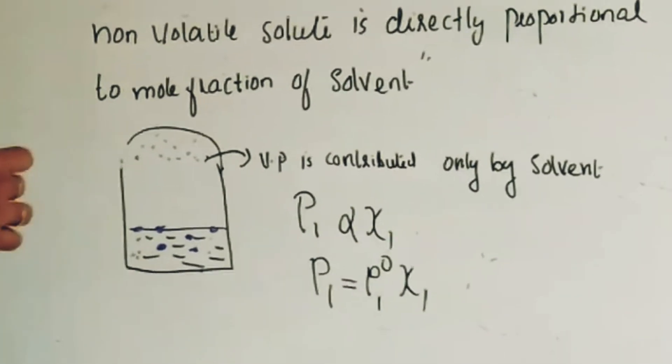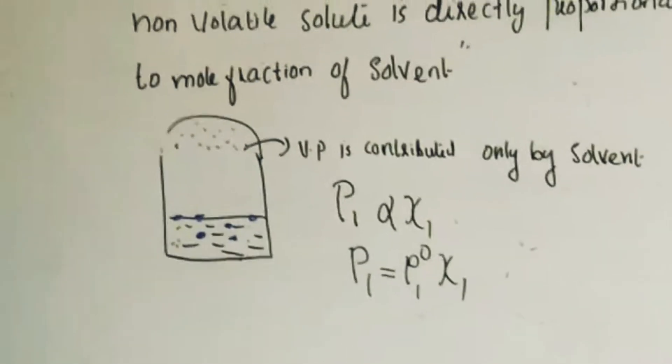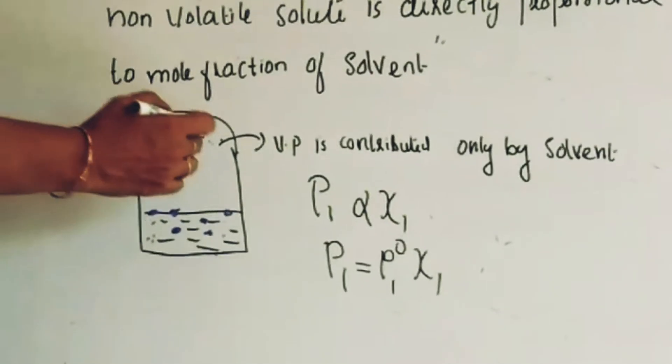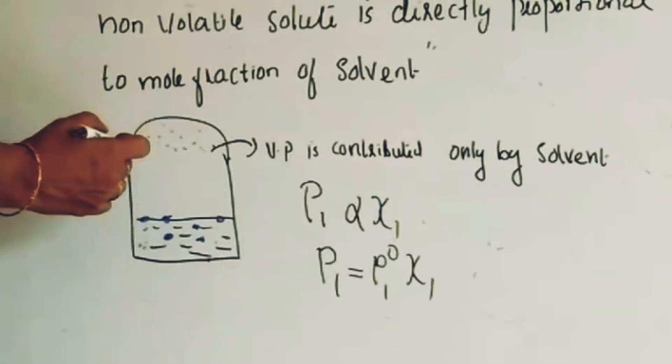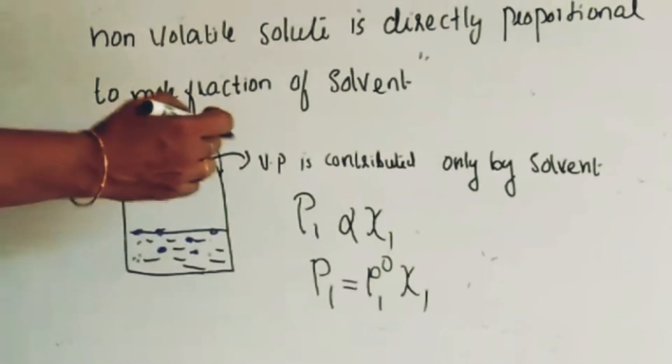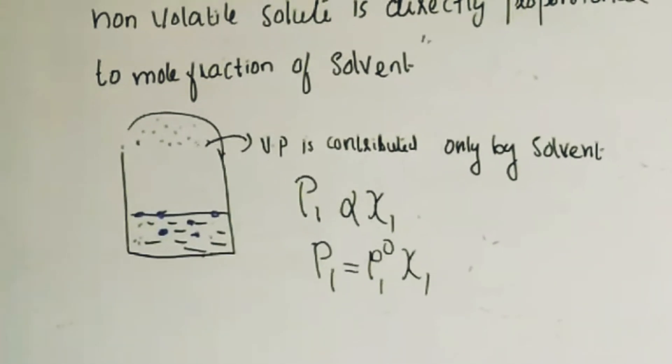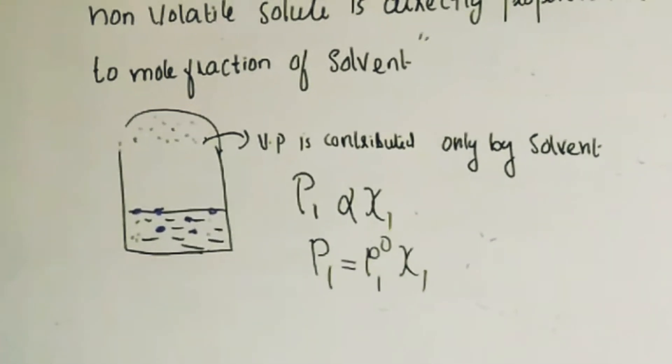In a case where one component is non-volatile or non-volatile solute, the vapor pressure may be contributed only by the volatile solvent. In such case, Raoult's law can be written like P1 is equal to P1°X1.